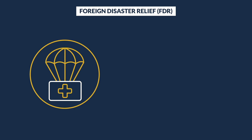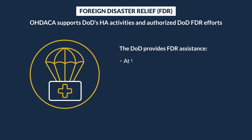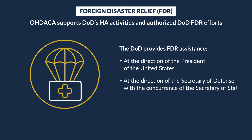The ODACA appropriation not only supports DOD's HA activities, but, when authorized, supports DOD FDR efforts. The DOD provides FDR assistance only at the direction of the President of the United States, at the direction of the Secretary of Defense with the concurrence of the Secretary of State, or in emergency situations in order to save lives.